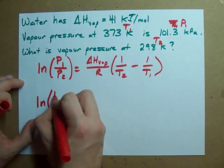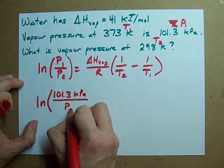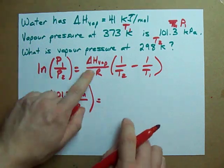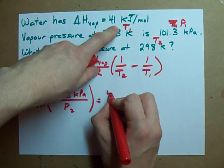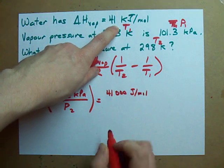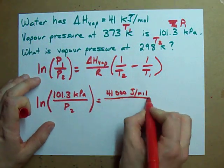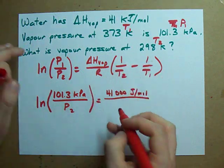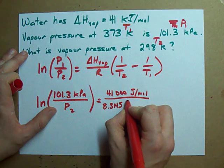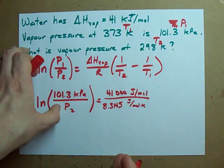So, the ln of the first pressure, 101.3 kilopascals, and I have to calculate my second vapor pressure. Here, enthalpy of vaporization, 41,000 joules per mole. Notice I converted kilojoules to joules. The reason I did that is because in my head, the gas constant is 8.3145 joules per mole Kelvin. You can look that up on your data sheet probably.